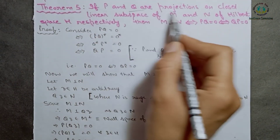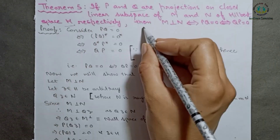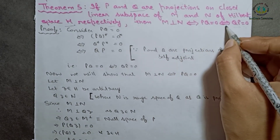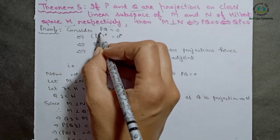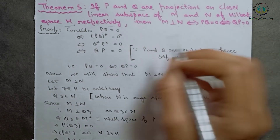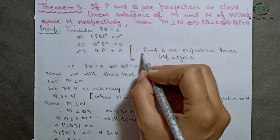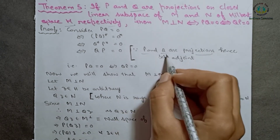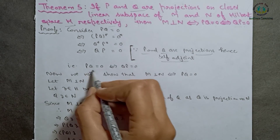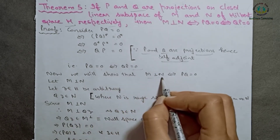The last important result of this video: if P and Q are projections on closed linear subspaces M and N of Hilbert space H respectively, then M is perpendicular to N if and only if PQ equals the zero operator, if and only if QP equals the zero operator. We first consider PQ equals 0 and prove QP equals 0: taking adjoints on both sides gives Q* P* equals 0, and since both P and Q are self-adjoint projections, QP equals 0.